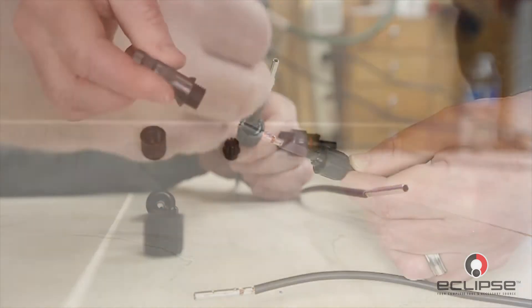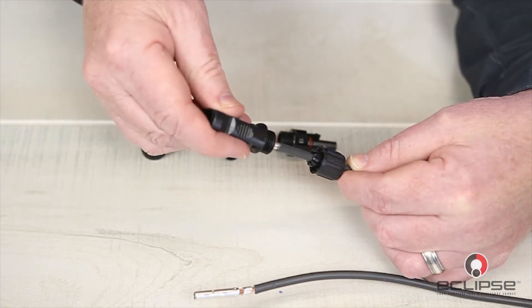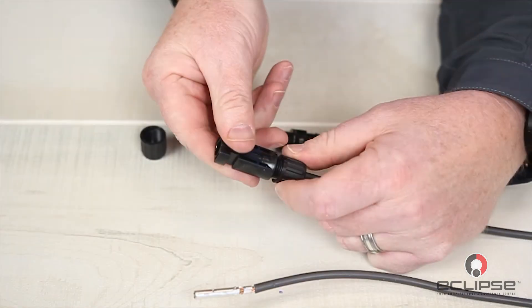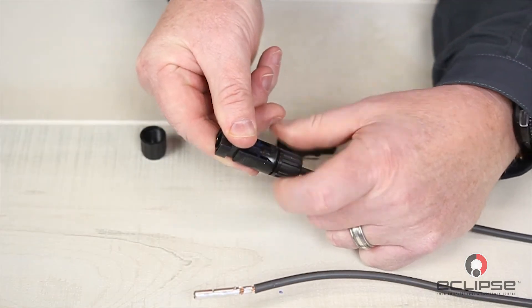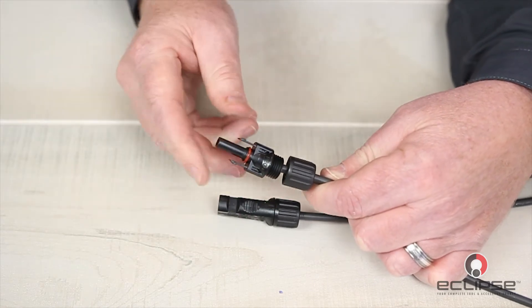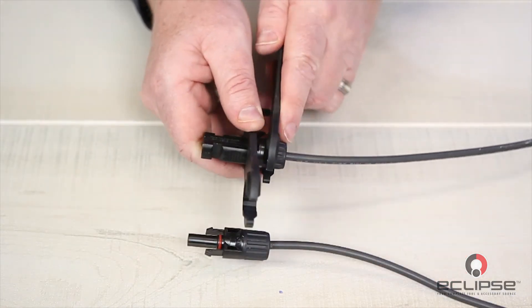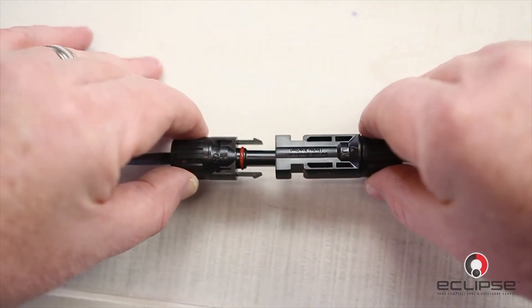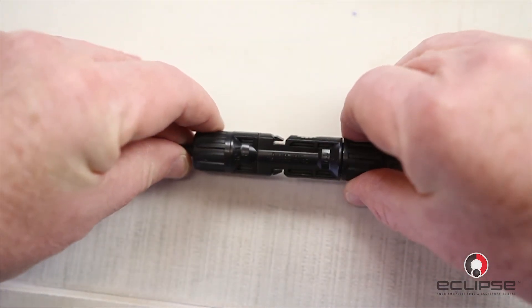Insert the pin into the connector until it locks in place. Often, there's a noticeable click sound that will let you know it's secure. We're going to repeat these steps using the male end of the connector. The male and female ends now can be connected.